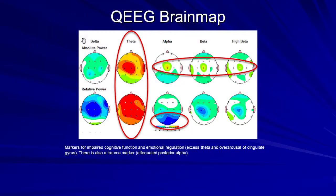That's also limbic activity — theta is the rhythm of the limbic system, and his limbic system is just blowing and going. He's got another marker that I see a lot with anxiety, right in this area of the brain, which gets over-aroused with anxiety and PTSD. It's called the cingulate gyrus.